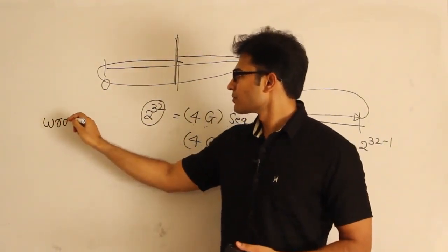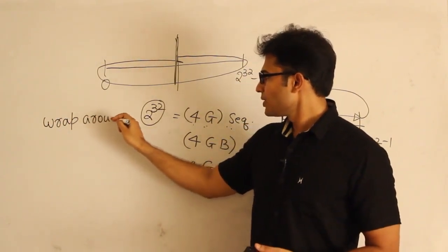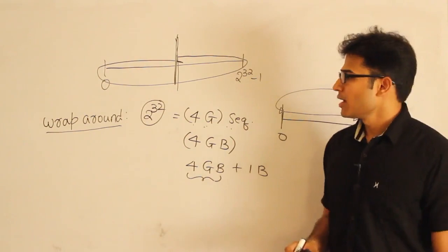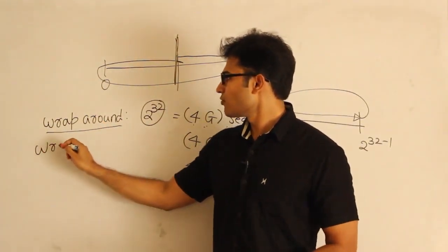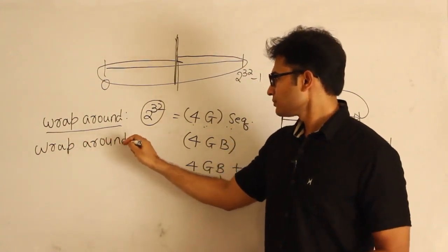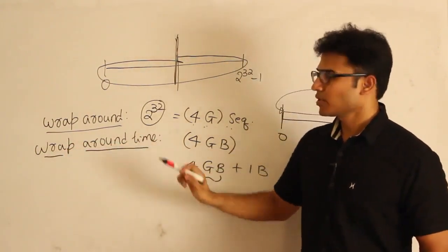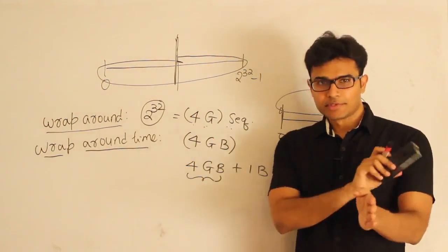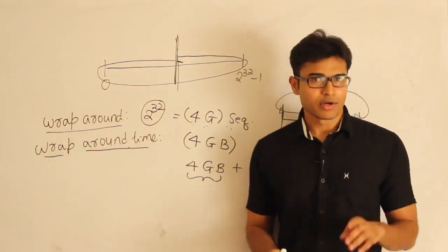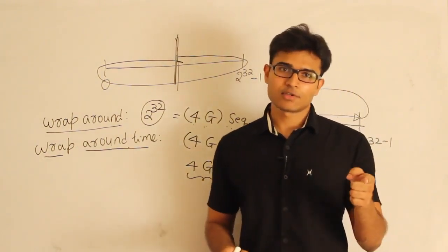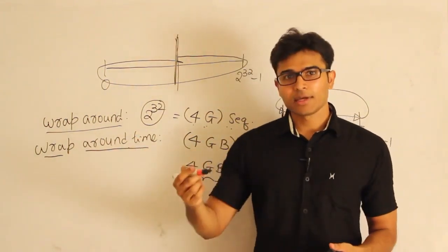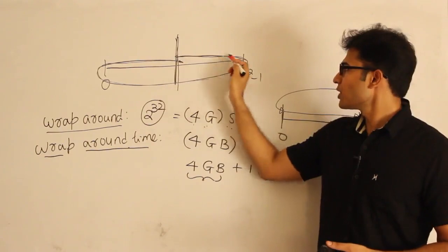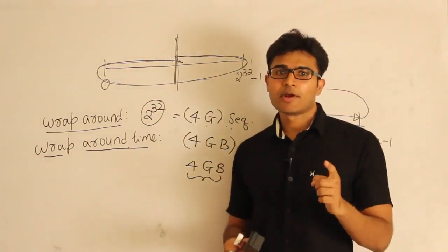This problem is called wrap-around — using up all the sequence numbers and then reusing the same sequence number already used. From this we get a value called wrap-around time. Wrap-around time means the time taken to wrap around — that is, if you start from some sequence number, after how much time are you going to use the same sequence number again? What does this wrap-around time depend on?